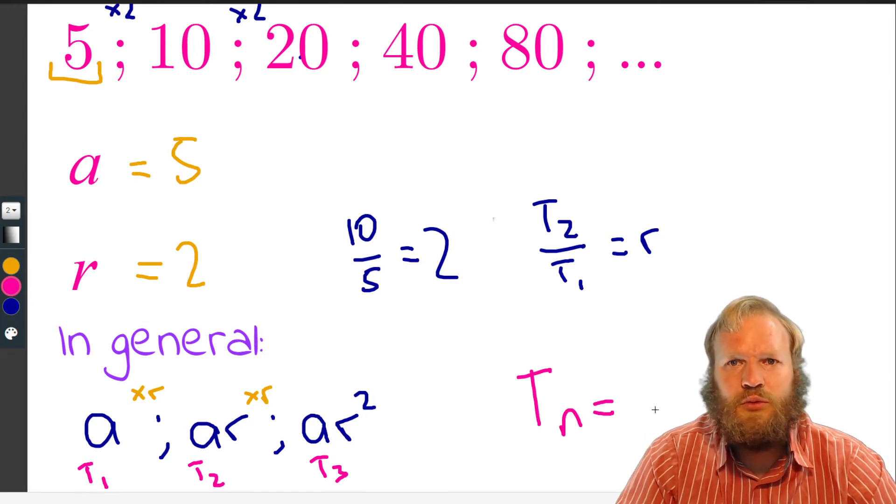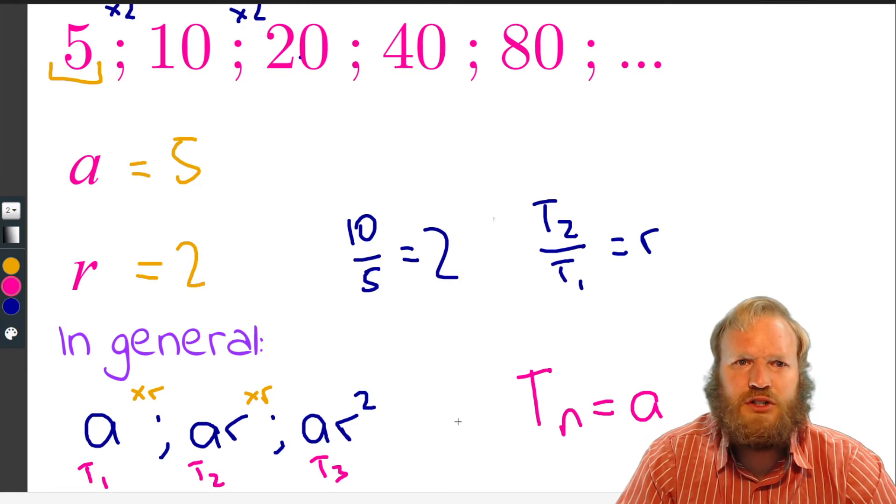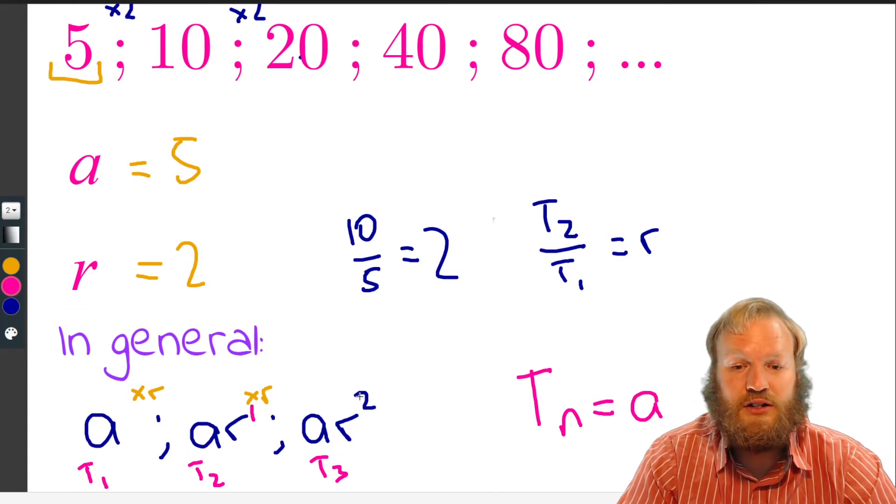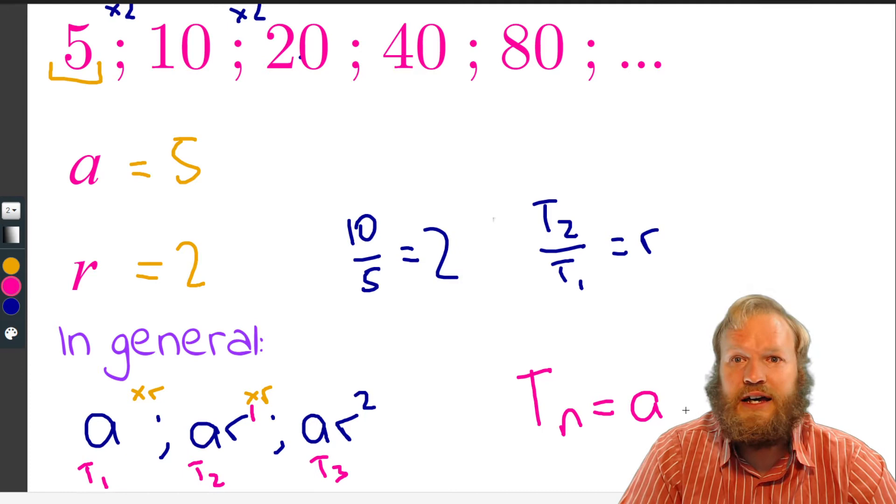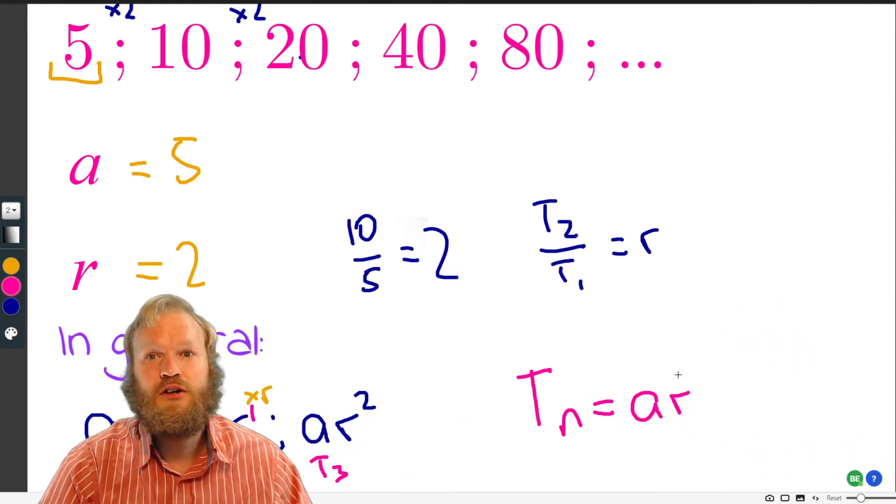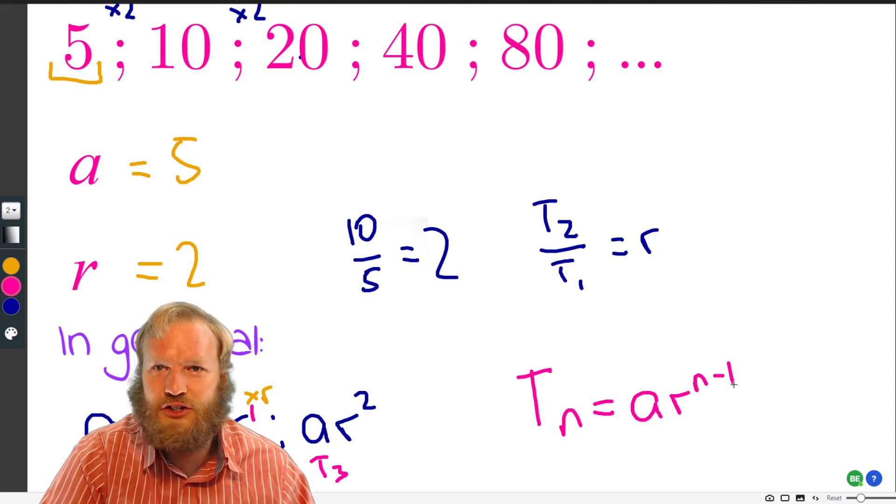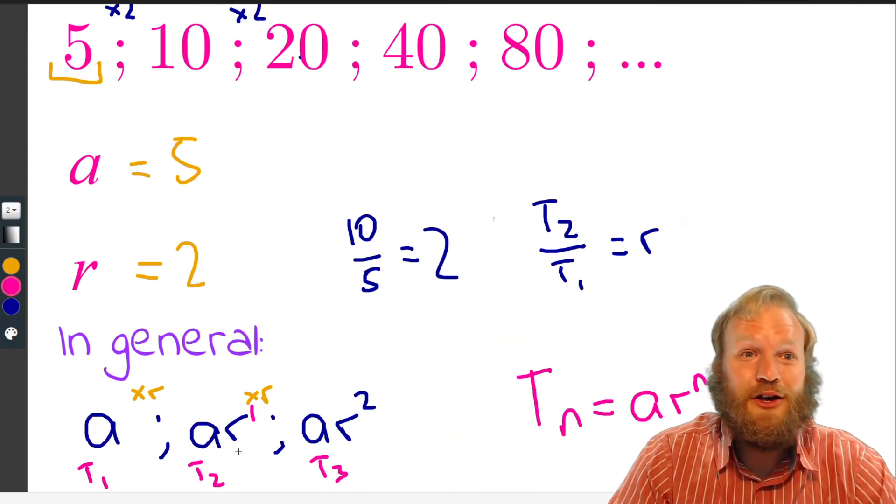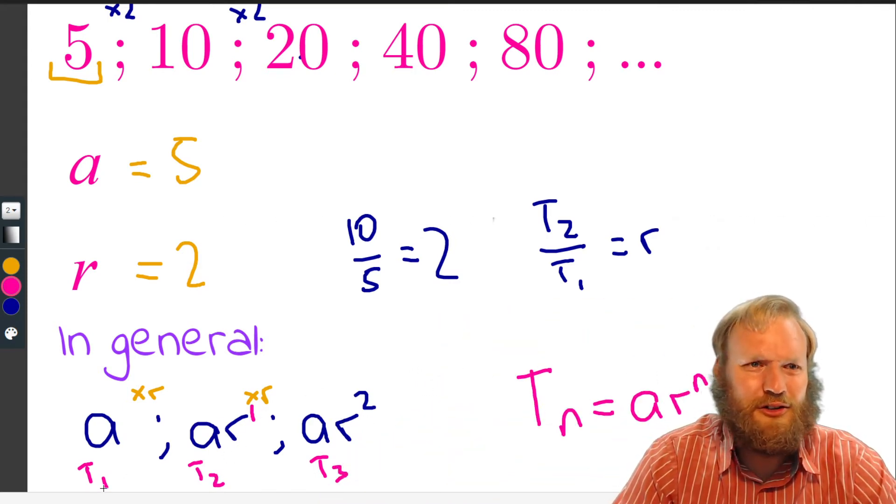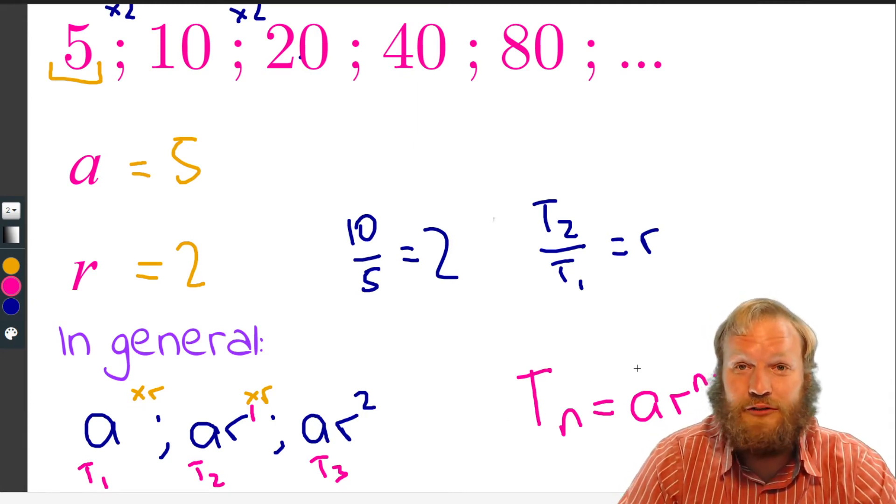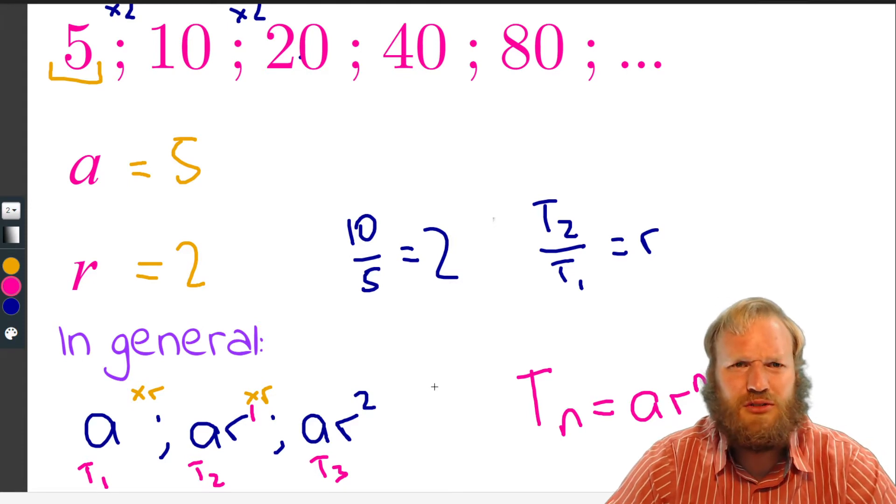So now if we look at it, well, this is T1, this is T2, this is T3, then for TN in general, we've got A times, well, let's look. T2 was AR, so like AR to the 1. T3 is AR squared. So TN is AR to the power of what? Well, to the N minus 1. Because look, when it was 3, it was 2. When it was T2, it was 1. When it was T1, well, it's AR to the 0. So there's our general formula. It is given to you, but we can work it out from there.